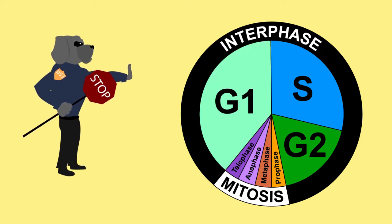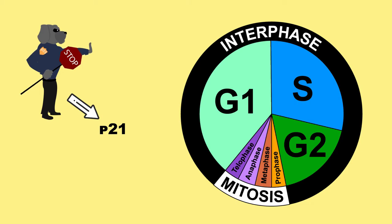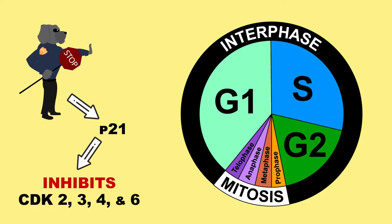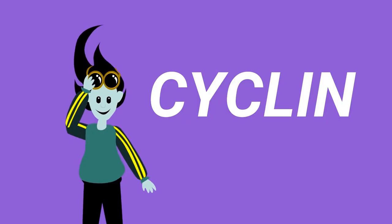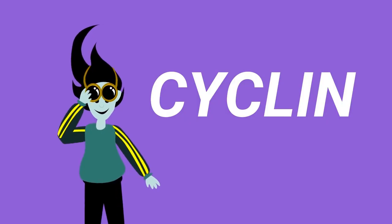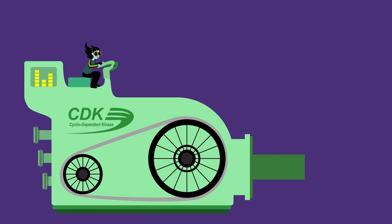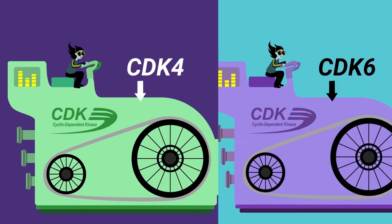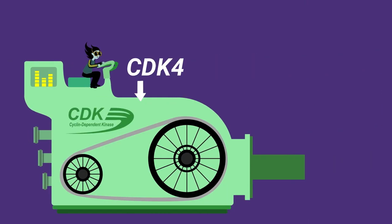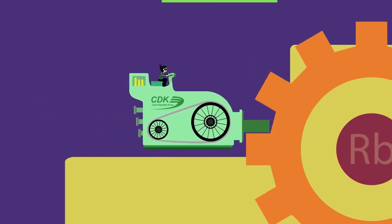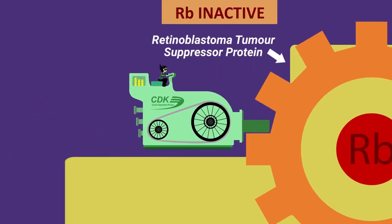P53 does this through the induction of P21, which inhibits CDKs 2, 3, 4, and 6. In short, the cyclin-D/CDK4 and cyclin-D/CDK6 compounds phosphorylate RB, which is an important step to get into S phase.